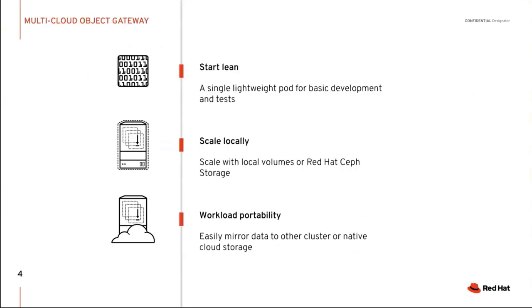Now we'll drill down to the multi-cloud object gateway. The idea is that you can start lean in a very lightweight way. Once you deploy, the service is up and running and you can start using it. It's very easy to get the endpoint, access key, and secret key and have a service that behaves like an Amazon S3-compatible storage but runs locally in your OpenShift. Whenever you move your application from dev to test, staging, and production, it behaves exactly the same way and from the application point of view you don't need to change any code.